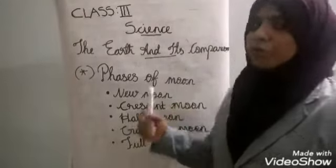First one, new moon. Look at the picture. When the moon is between the earth and sun, we cannot see the moon at all. This is called new moon. It is dark on the new moon night.